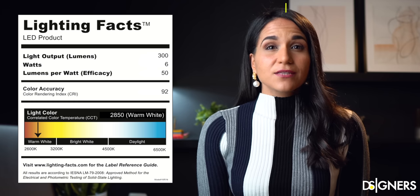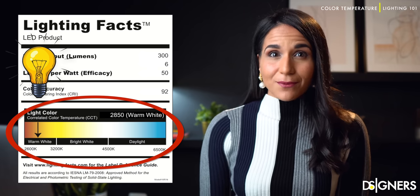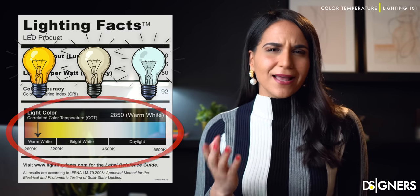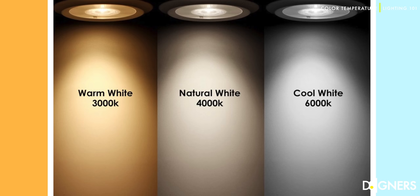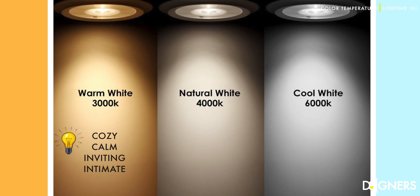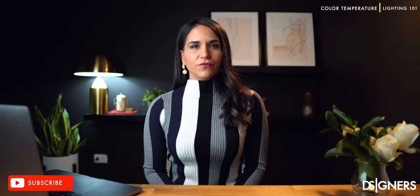Color temperature is used as a method of describing the warmth or coolness of a light source. The spectrum of color temperature is measured in Kelvin degrees, and these values are used to describe the color emitted from lighting sources. As humans, we perceive color temperature in different ways, so each one will be adequate for different applications and activities.